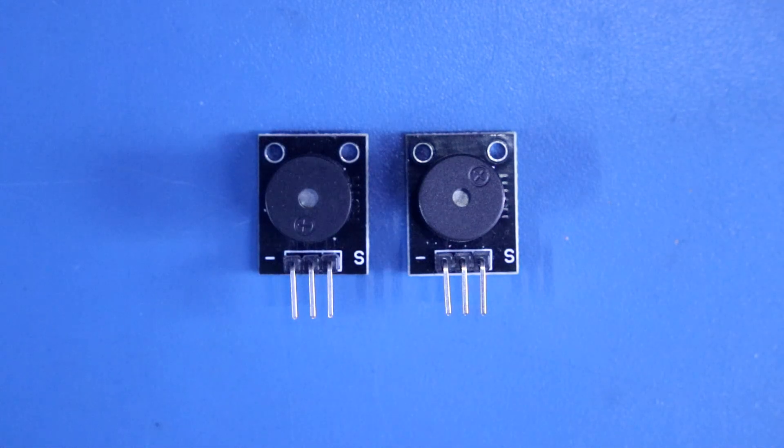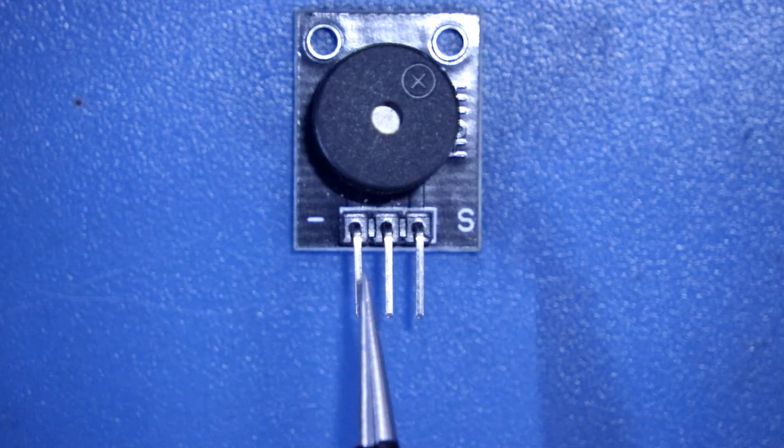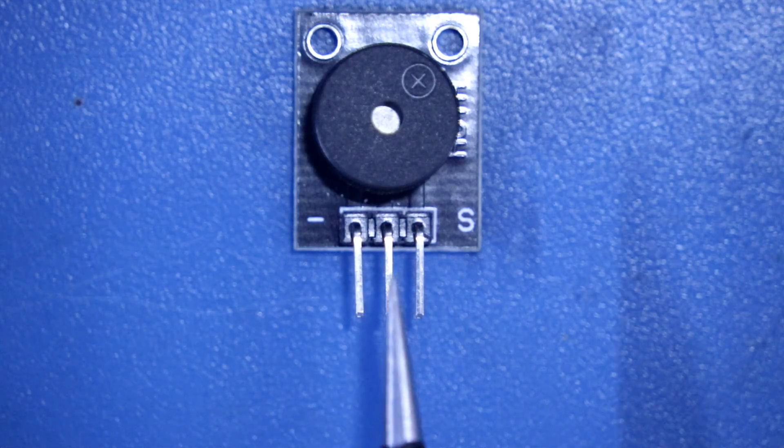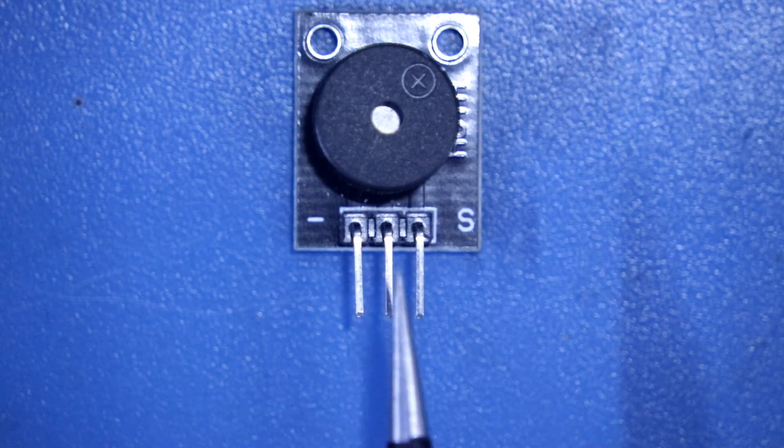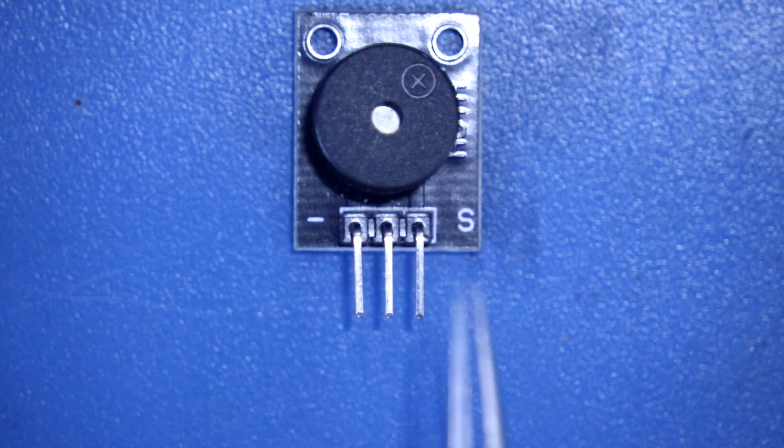Both the buzzers look the same, so how to find out which is which? The pin out of both modules is the same. The first pin is negative, middle pin is no connection pin, and the third pin is power supply pin or signal pin.